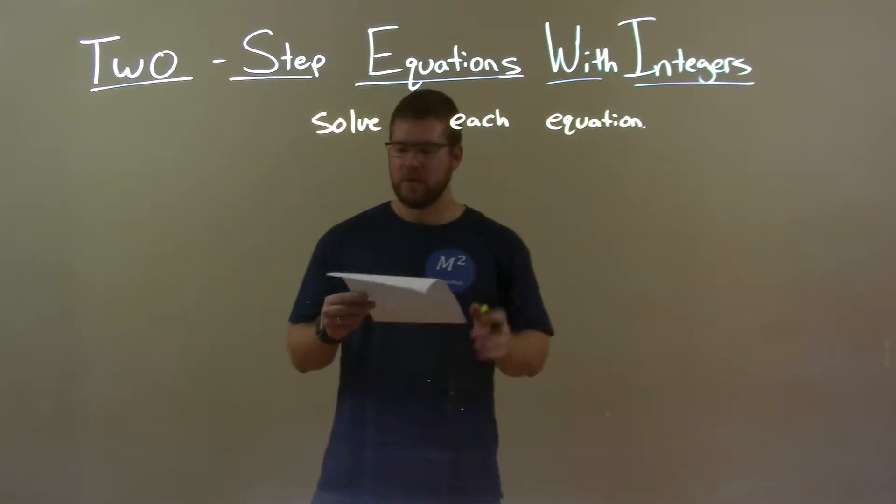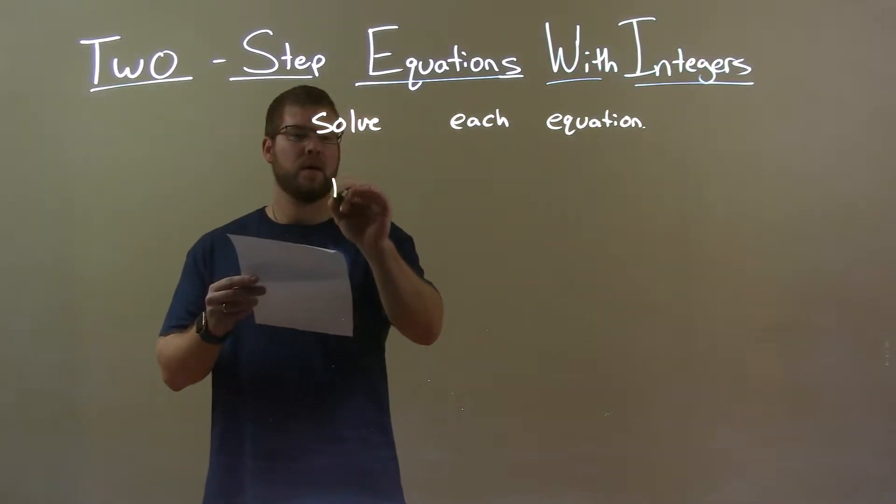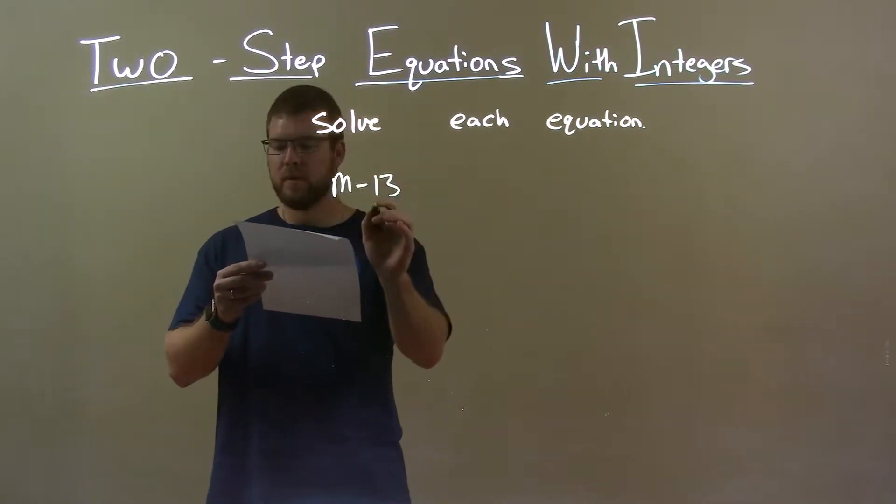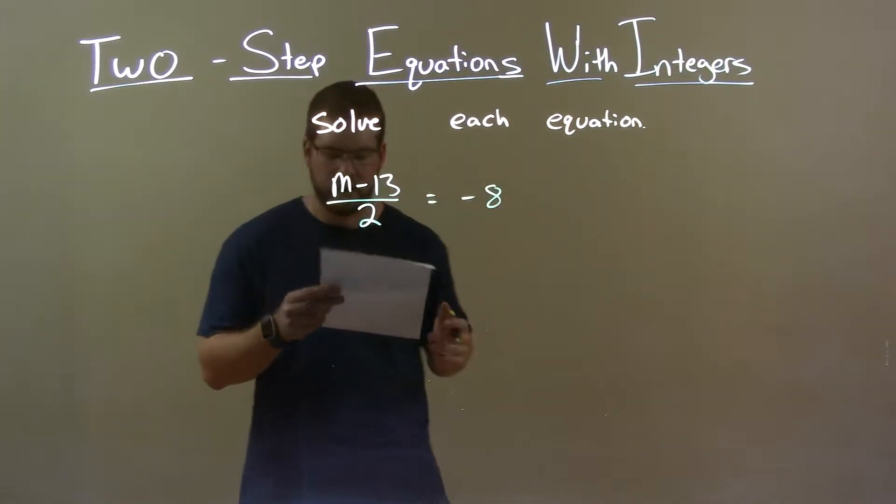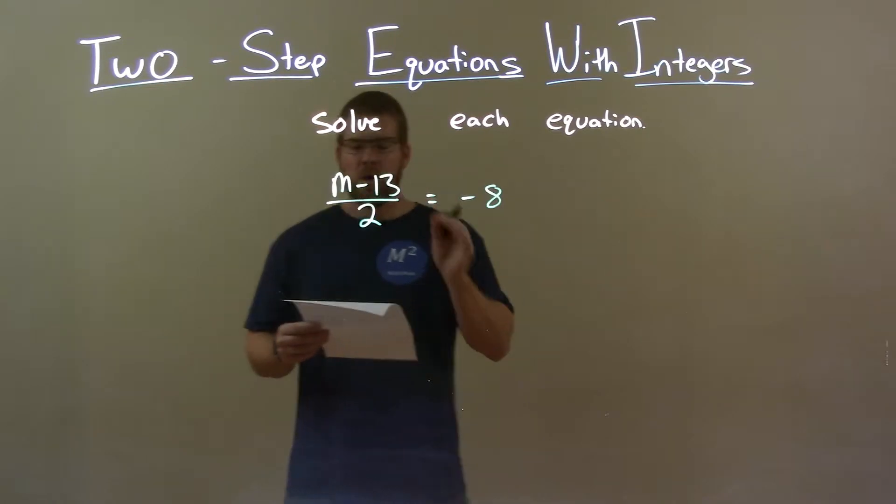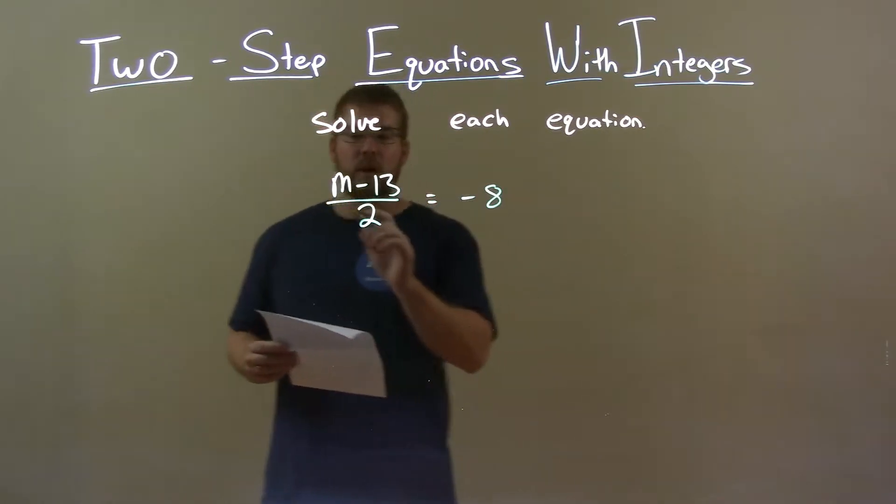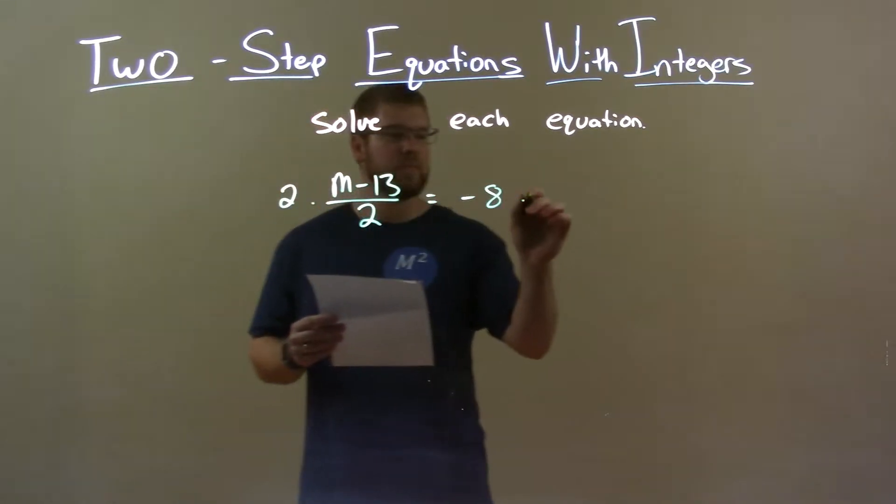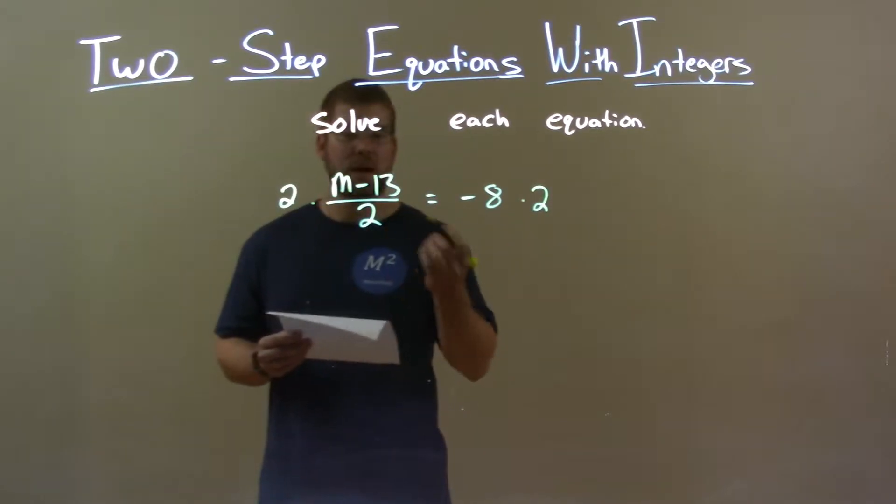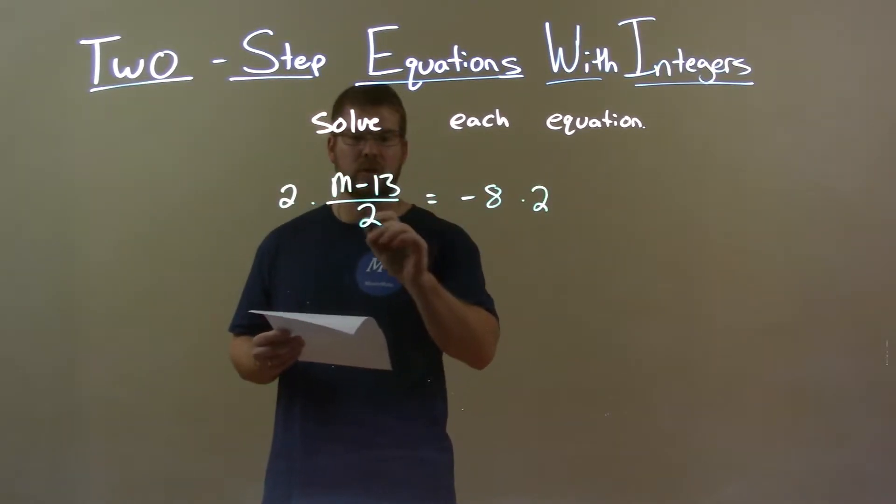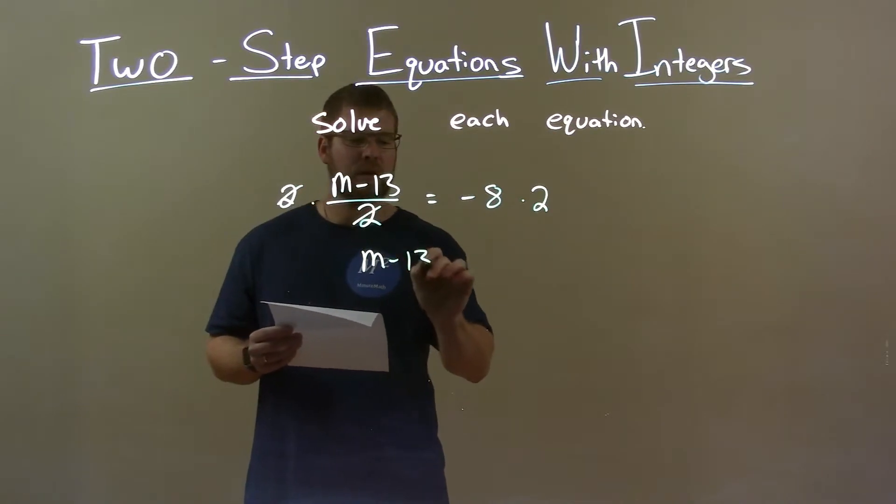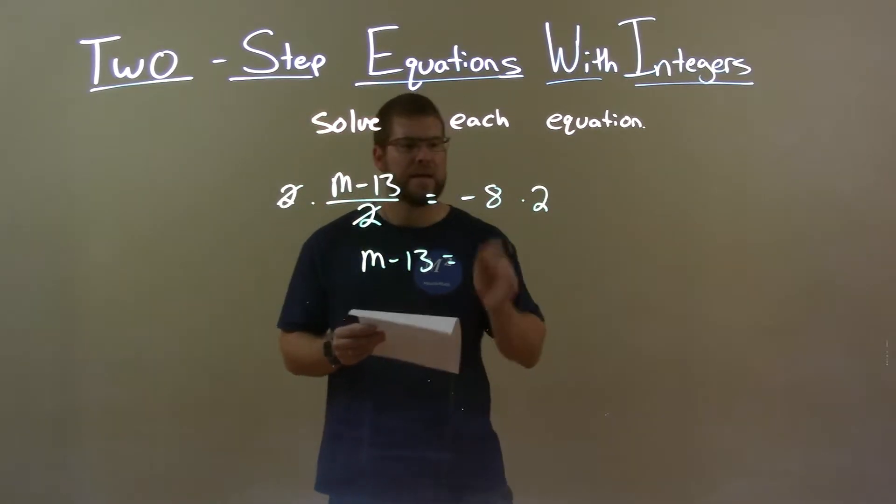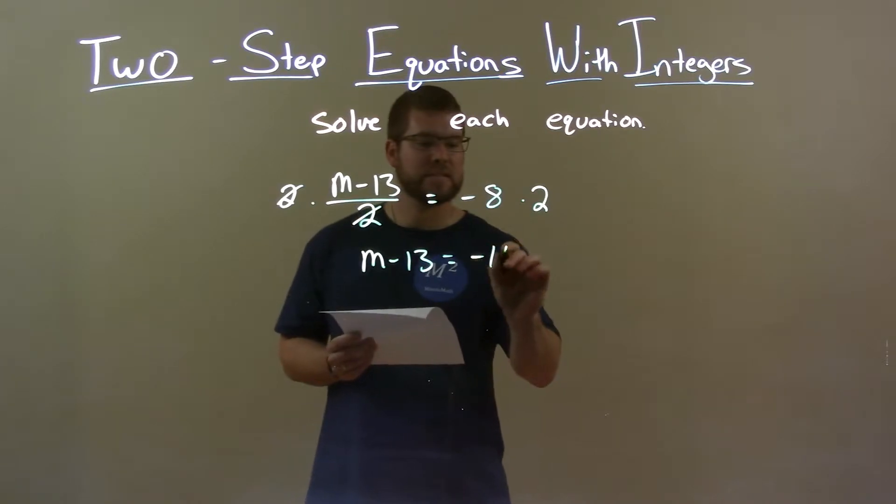If I was given this equation, m minus 13 over 2 equals negative 8, the first thing I want to do is multiply both sides by 2. Since we're dividing by 2, the opposite of division being multiplication, this will eliminate the 2's on the left. I have m minus 13 now on the left. Negative 8 times 2 is negative 16.